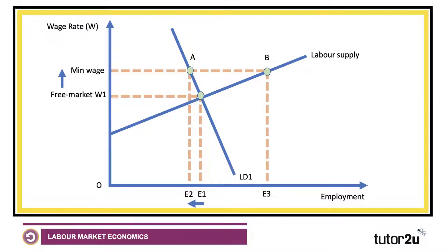The key thing, as far as I'm concerned, is the impact on employment. If you draw the labour demand curve LD1 as relatively inelastic — wage inelastic — then quite a chunky increase in the minimum wage shown there only leads to a relatively small fall in employment. Yes, there are more people looking for work at the minimum wage, but employment contracts to point A.